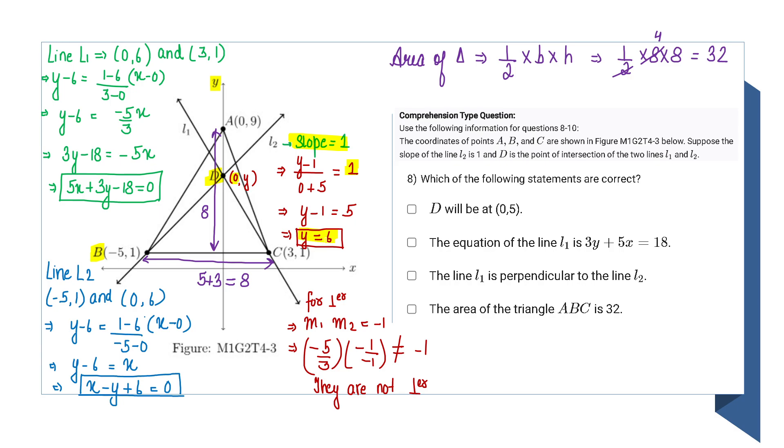From this equation I will get the value of y, the y-coordinate of D, and that is 6. So the coordinates of D are (0,6). Option A gets rejected because the correct answer is (0,6), not (0,5).